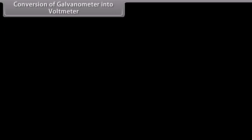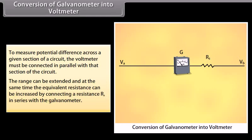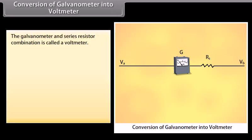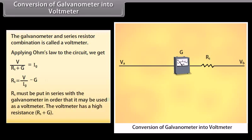Conversion of galvanometer into voltmeter: to measure potential difference, the voltmeter is connected in parallel with the circuit section. The range is extended and equivalent resistance increased by connecting a resistance R_S in series with the galvanometer. Applying Ohm's law: V / (R_S + G) equals I_G, giving R_S equals V / I_G minus G. The series resistor R_S must be connected with the galvanometer; the voltmeter then has a high resistance of R_S plus G.